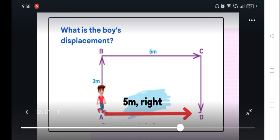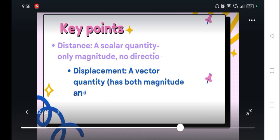Moving on, we have these key points in today's concept. First, distance is considered a scalar quantity since it only talks about magnitude without direction. On the other hand, your displacement is a vector quantity since it has both magnitude and direction.